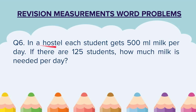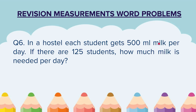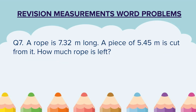Question 6. In a hostel, each student gets 500 ml of milk per day. If there are 125 students, how much milk is needed per day? They have told us the consumption of 1 student in a day, and we have to find the consumption of 125 students.